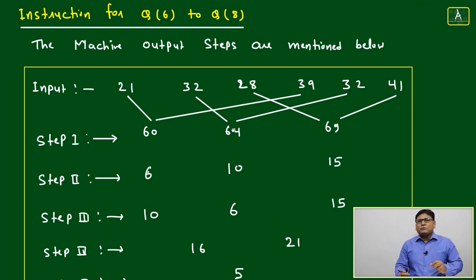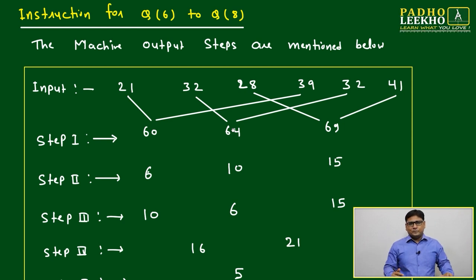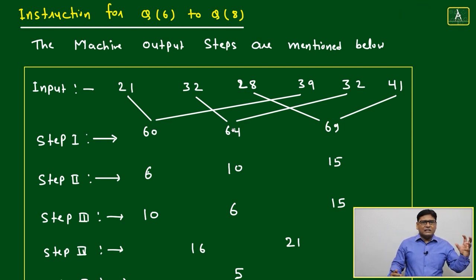Second scope of the questions: number of elements in input may change till it is reaching to output. Maybe here we have started with seven elements, after reaching to output we are getting only three elements. This can be possible.